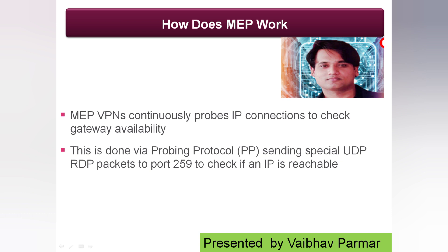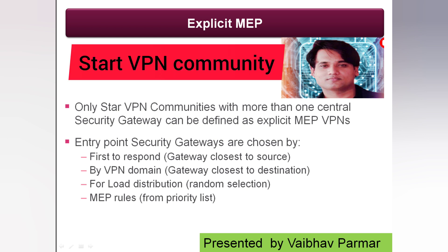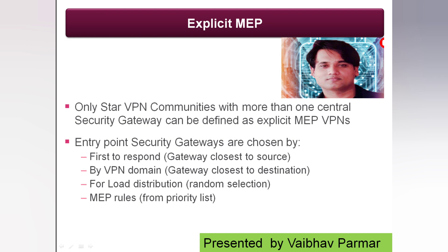You can define MEP in two ways: explicit MEP and implicit MEP. In explicit MEP, only Star VPN communities using more than one central security gateway can be defined as explicit MEP VPNs — this is the recommended method. Explicit MEP VPNs can be configured to have the entry point security gateway chosen by: selecting the closest gateway to the source via first response, selecting the closest gateway to the destination by VPN domains, selecting randomly for load distribution, or selecting from a priority list.